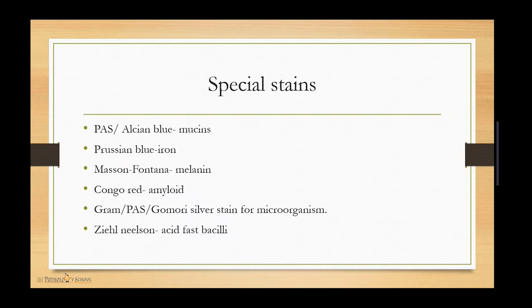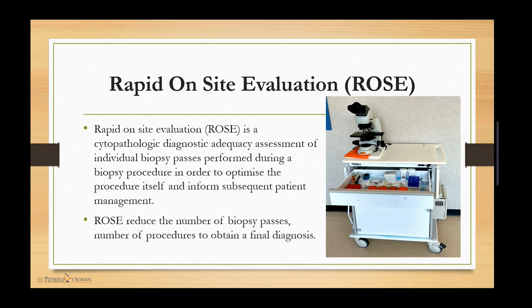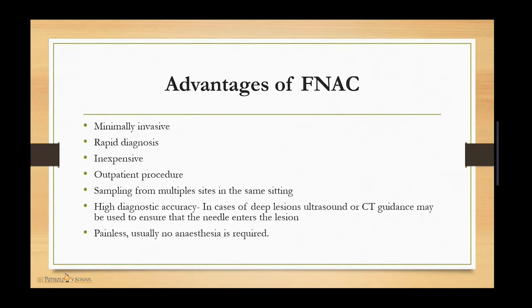Special stains used include: PAS or Alcian blue for mucins, Prussian blue for iron, Fontana for melanin, Congo red for amyloid, and Gram, PAS, or Gomori silver stain for microorganisms, and Ziehl-Neelsen for acid-fast bacilli. Rapid On-Site Evaluation (ROSE) is a technique for cytopathologic diagnostic adequacy assessment of individual biopsy passes performed during a biopsy procedure, to optimize the procedure and inform patient management. ROSE reduces the number of biopsy passes and procedures needed to obtain a final diagnosis.